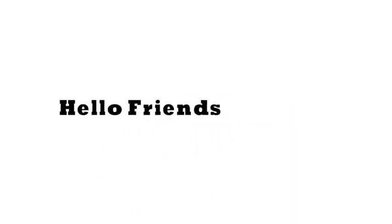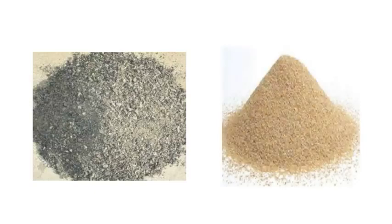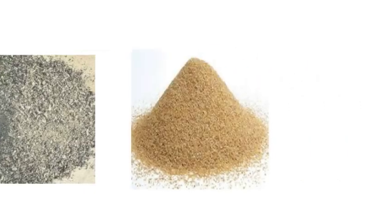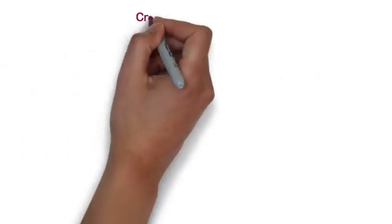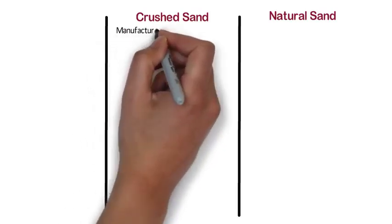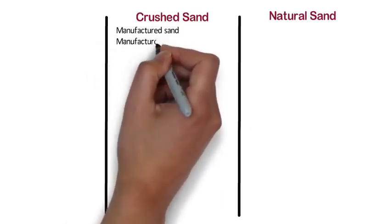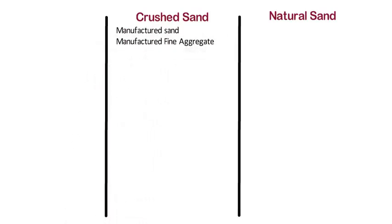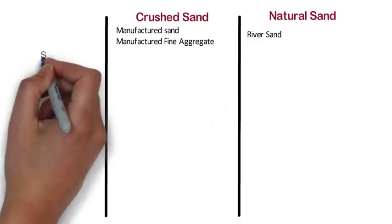Hello friends, in this video we are going to discuss the differences between crushed sand and natural sand. So let's begin. Crushed sand is also known as manufacturing sand or manufactured fine aggregate, whereas natural sand is also known as river sand.